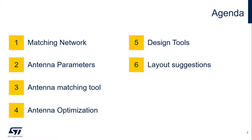Today's agenda focuses on designing the RF portion of your NFC system. We'll start by explaining the matching circuit — what it does, how it operates, and what components are used. We'll then look at antennas and the important parameters needed to calculate the matching circuit components, as well as how to measure them. Next, we'll take a detailed look at our antenna matching tool and walk through the steps to determine the matching values. Finally, we'll discuss how to optimize both the antenna and the matching circuit, followed by a brief overview of design tools and layout suggestions.